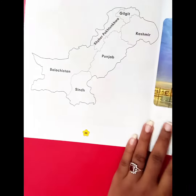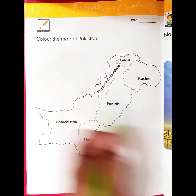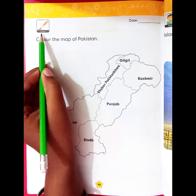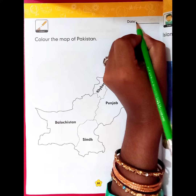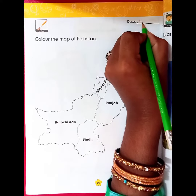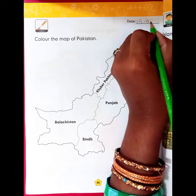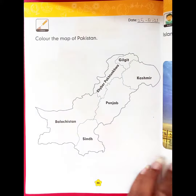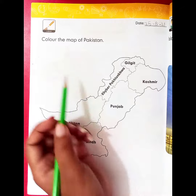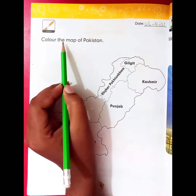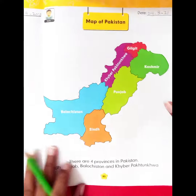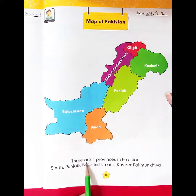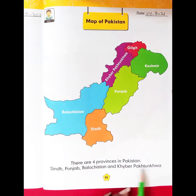The icon is color — mention the date first: 25 August 2021. The heading is color: The Map of Pakistan. Let's read it: there are four provinces in Pakistan.